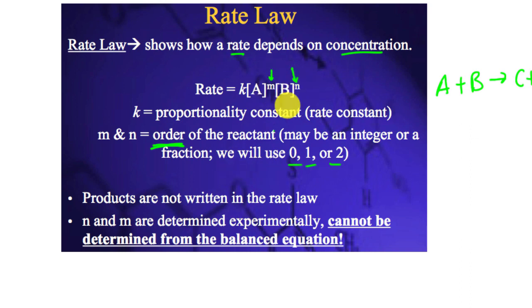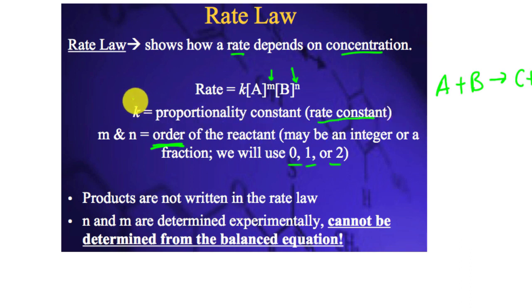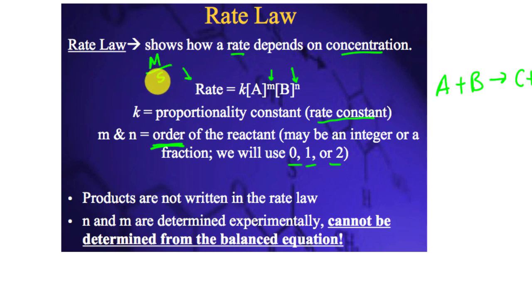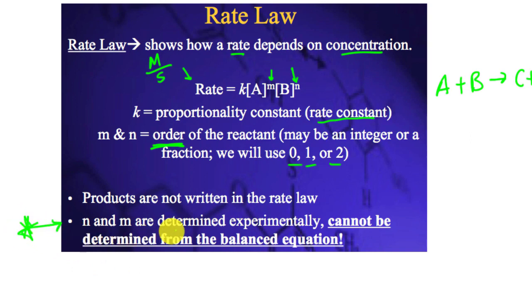A and B are your reactants. K is referred to as the proportionality constant, or rate constant — it's a lowercase k, not capital K from equilibrium. The units are molar per second for rate, and K's units will correct and make both sides proportional. Products are never written in the rate law. Very importantly, you cannot figure out the orders m and n by looking at the balanced equation — you have to get them from experiment.